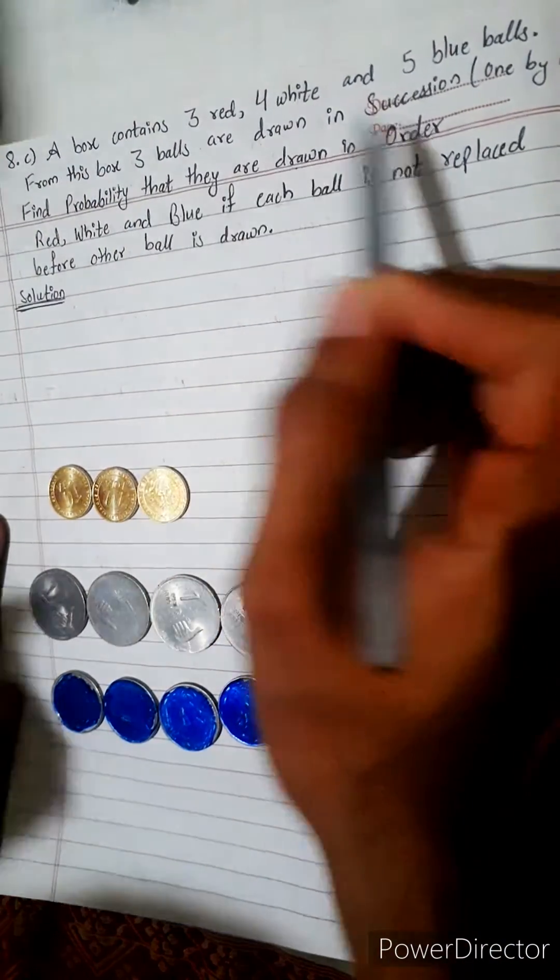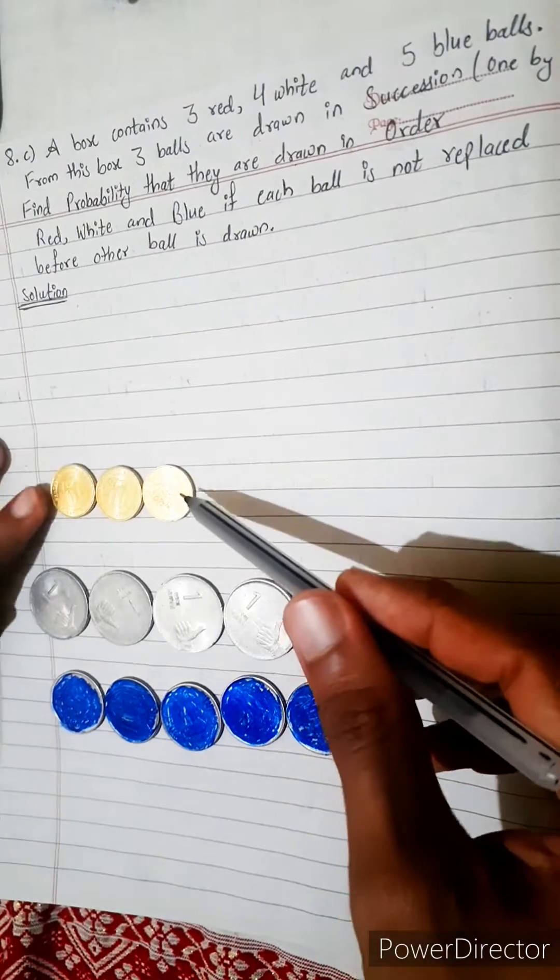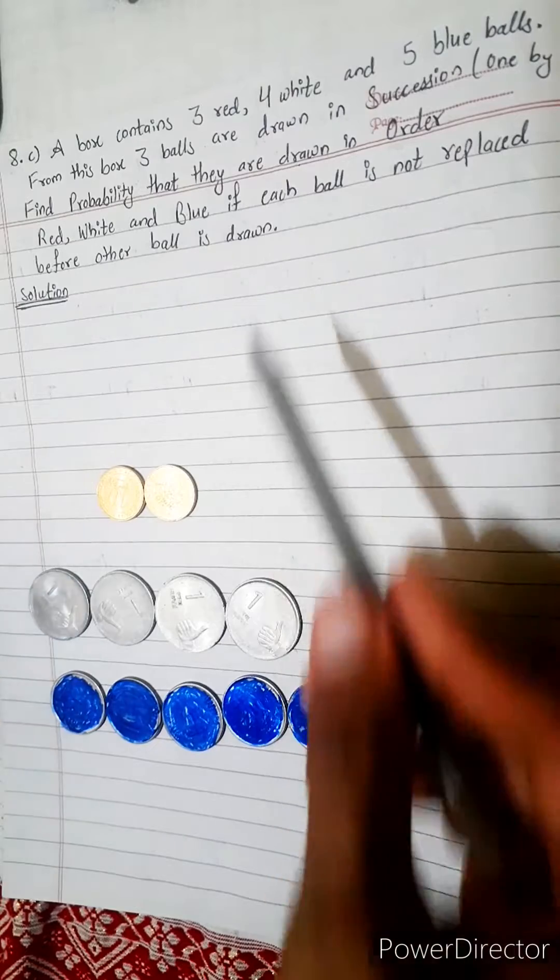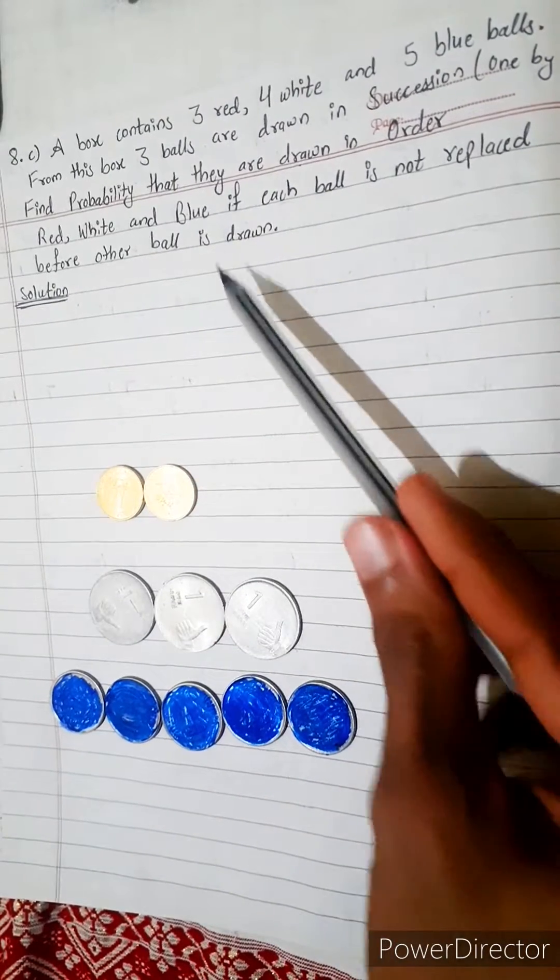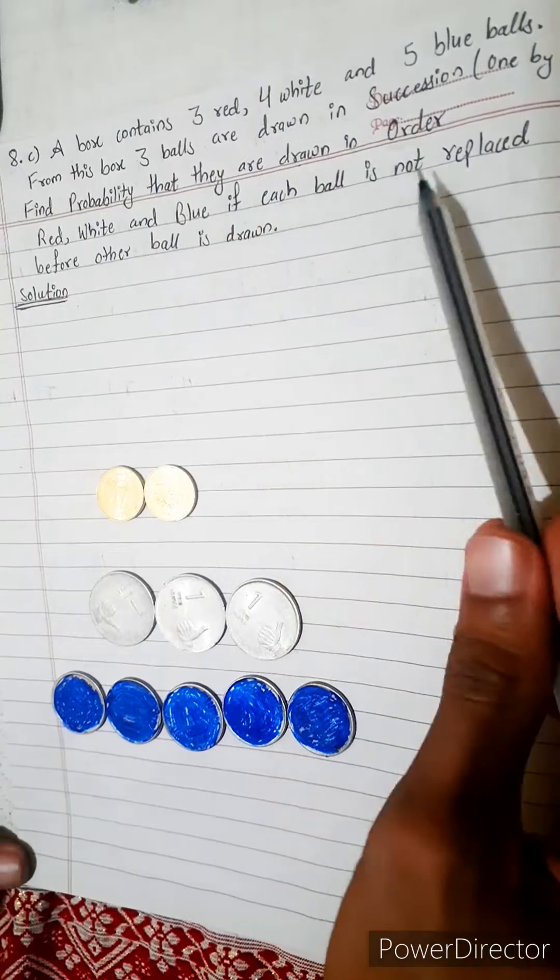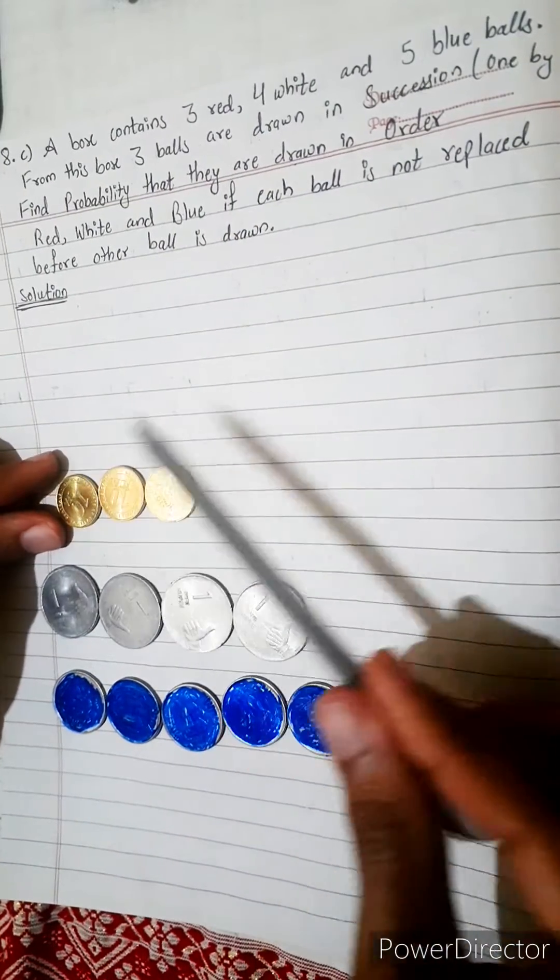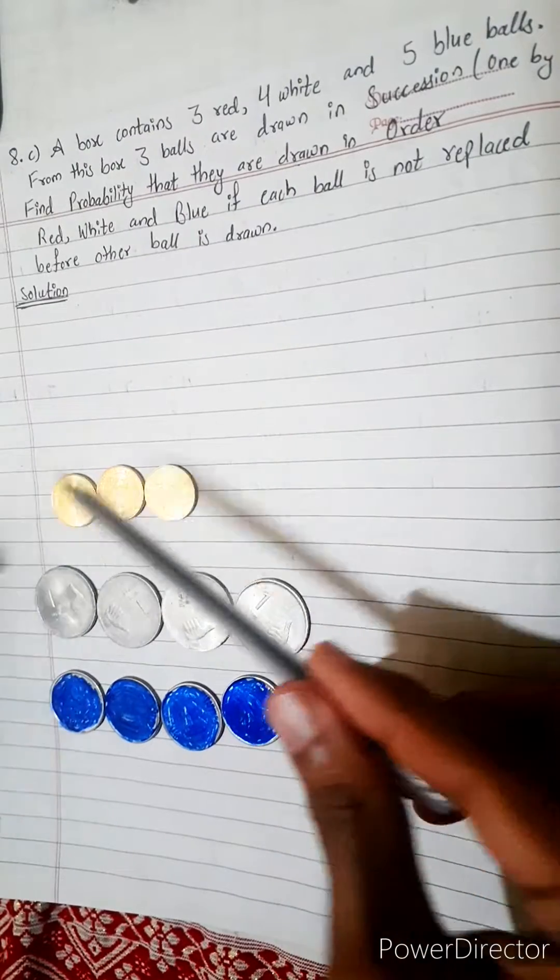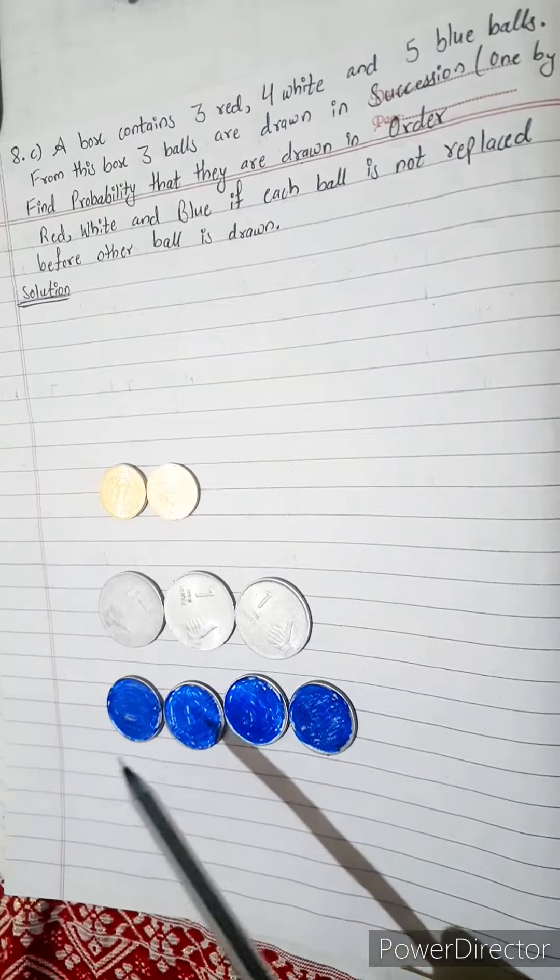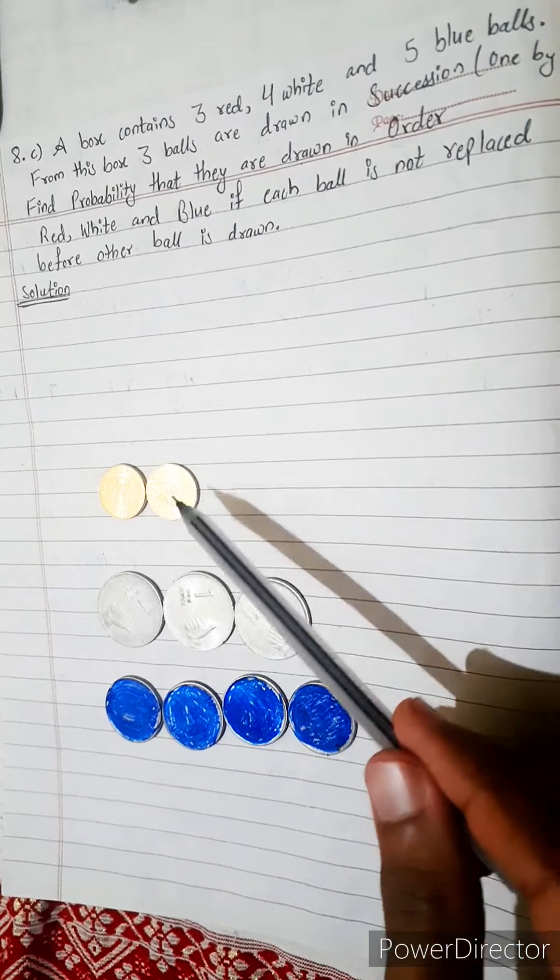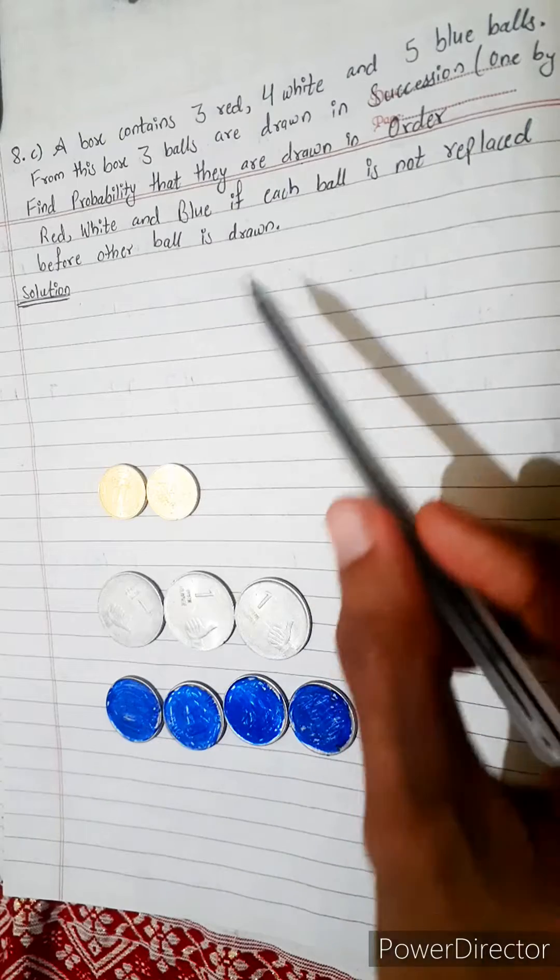Find probability in order. The first should be red, the second should be white. The balls are not replaced, they are not put back. The third should be blue. Now let's find its probability.